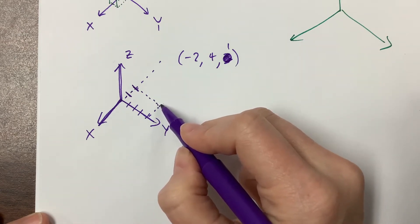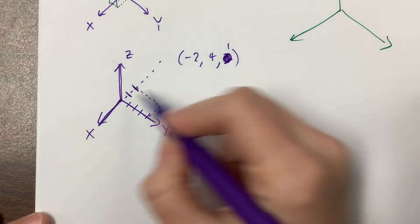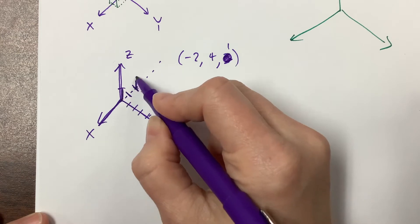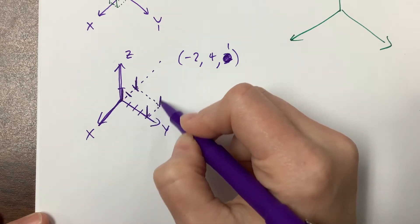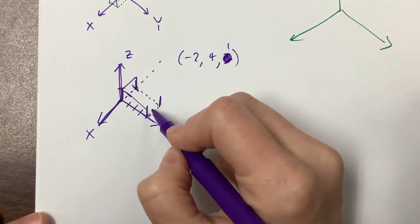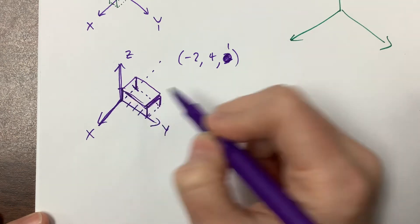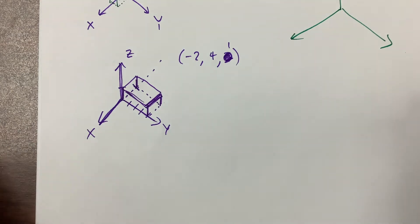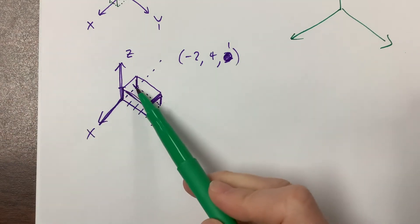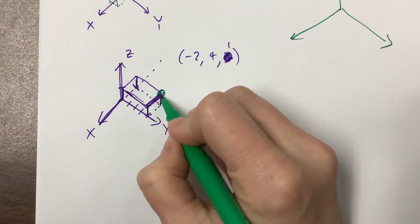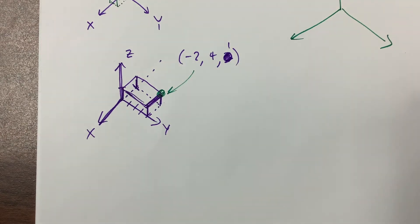So this is the point (-2, 4, 0). And now we need to come up 1 in the z direction. This is my attempt. The point that we care about, we had gone back 2 in the x direction, over 4 in the y, and up 1 in the z. We're looking at this point right here. Practice these, you'll get better at them as you go.